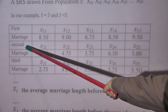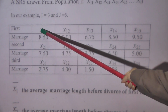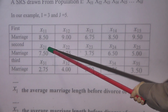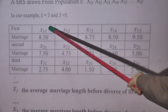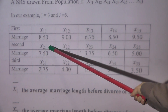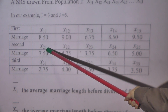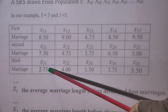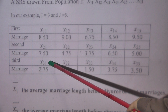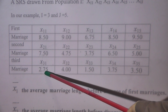For the second group, we also have five replications, and these five are independent from the first five — it's not the same couples observed for their second marriage. x₂₁ is the first couple in the second group; they last 7.5 years for their second marriage. Similarly, the third group also has five observations — people who had a third marriage. The first couple in our data set for that group lasts 2.75 years.